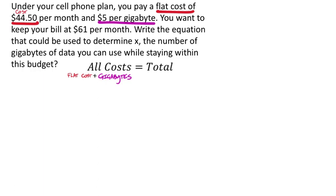We have the total also, which was given. That would be our total bill, $61 per month. We do have the cost: the flat cost plus the gigabytes should equal the total. Do we have those values? We got the flat cost, definitely. That's $44.50. They gave us the total directly as $61 per month. All of my costs added together should be that $61.